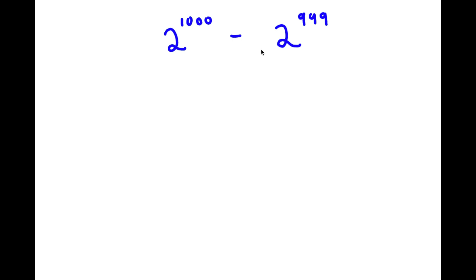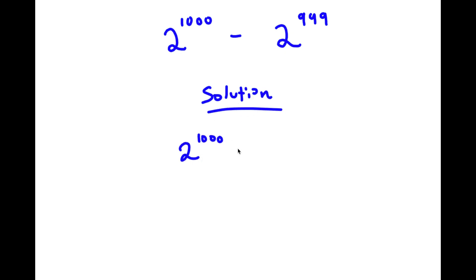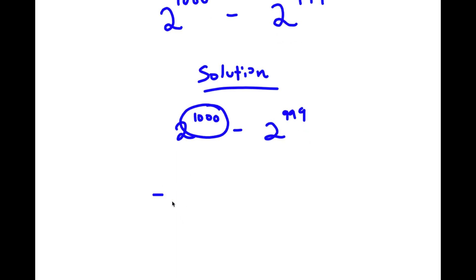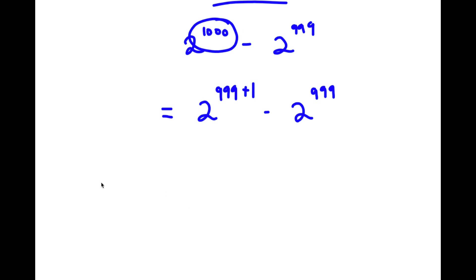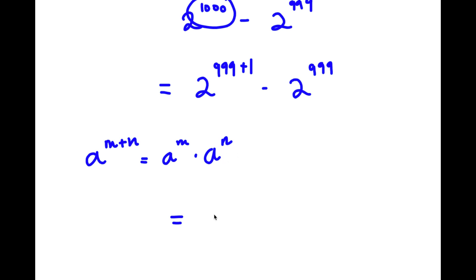In this problem, I need to simplify 2^1000 - 2^999. I'll rewrite 1000 as 999 + 1, so I have 2^(999+1) - 2^999. Using the exponent rule a^(m+n) = a^m · a^n, this becomes 2^999 · 2^1 minus 2^999.